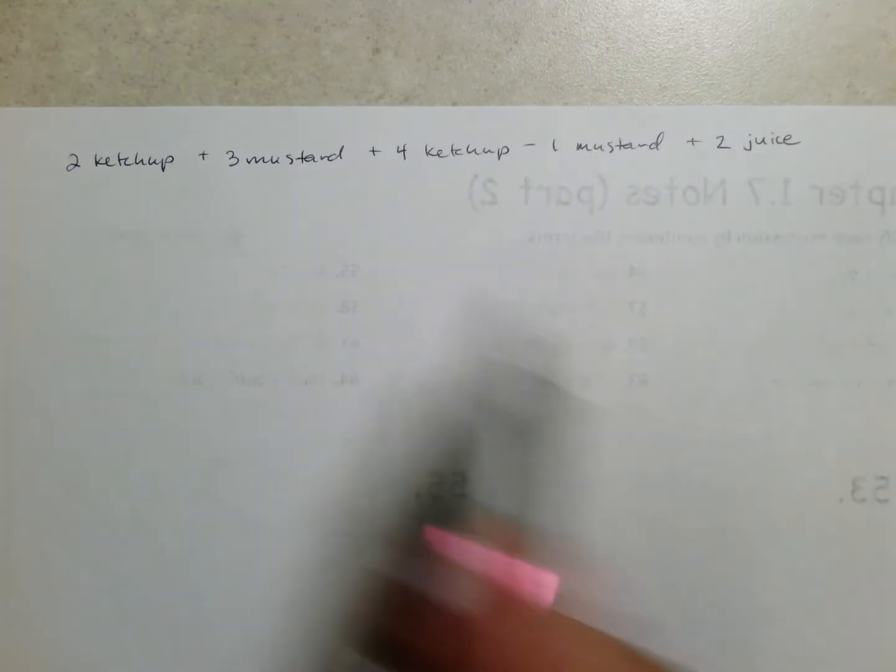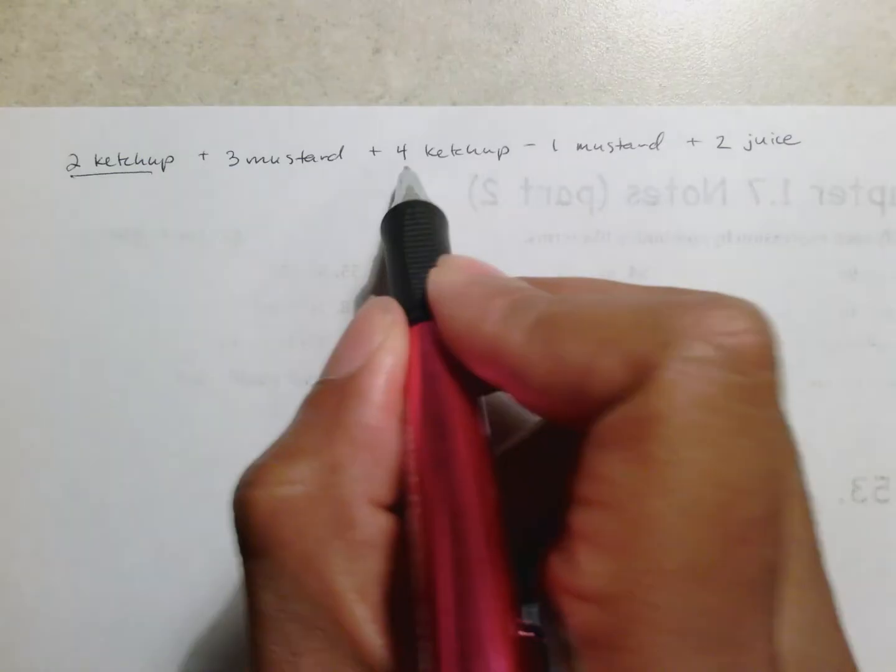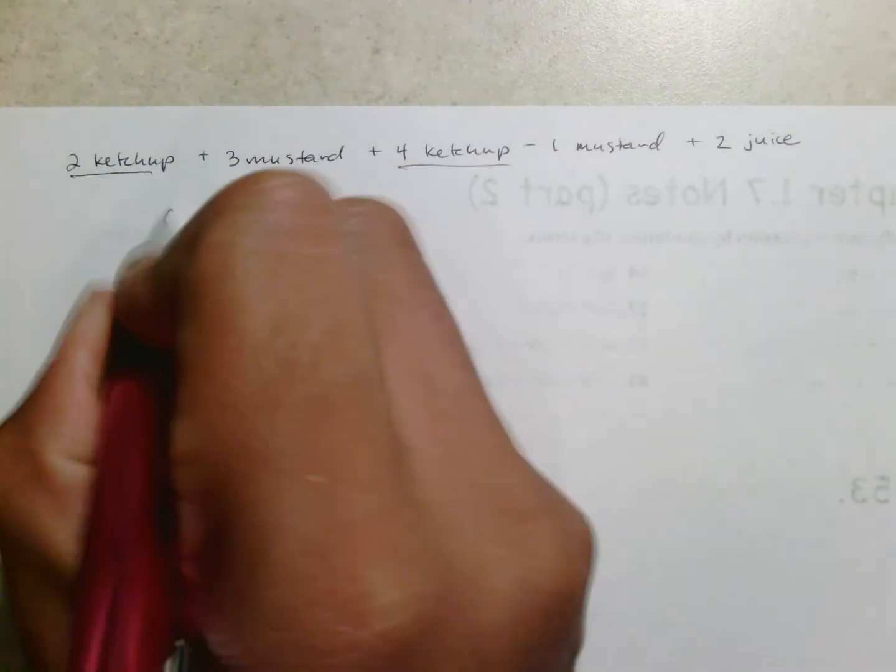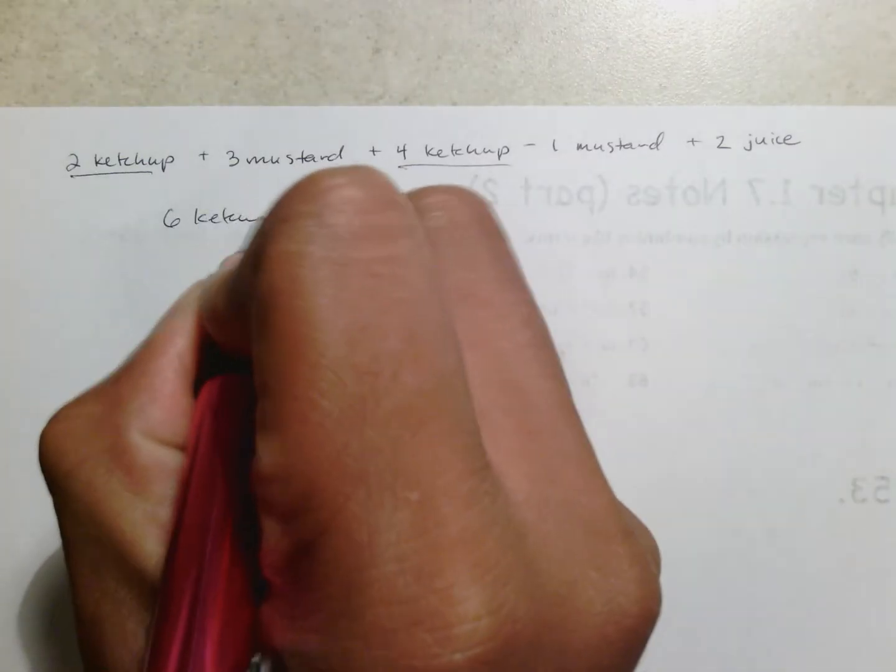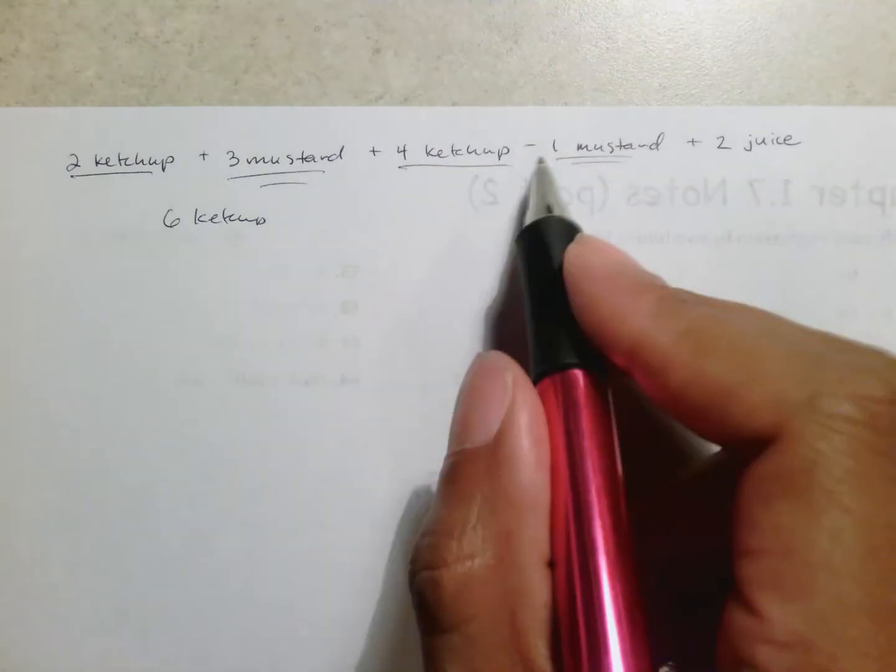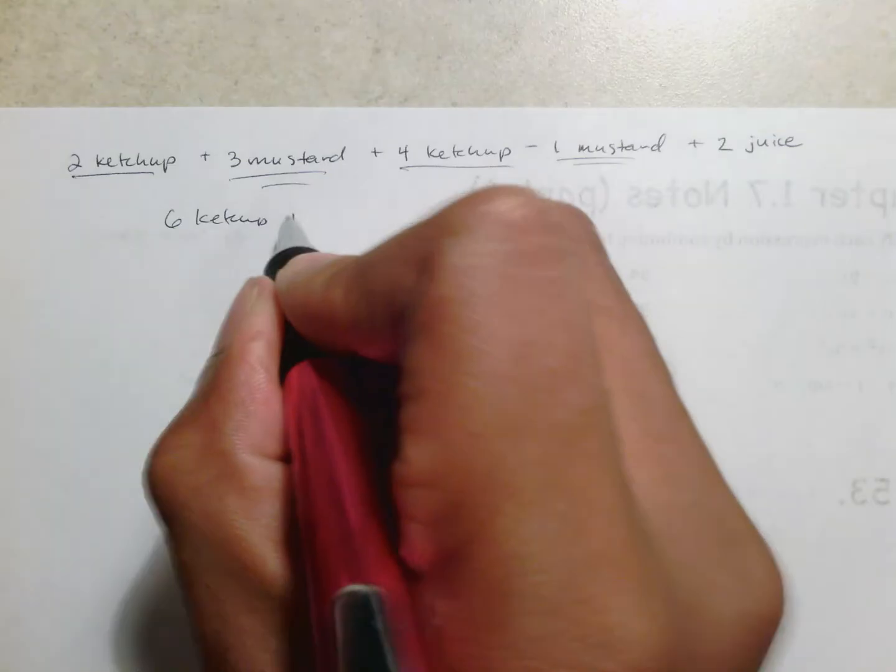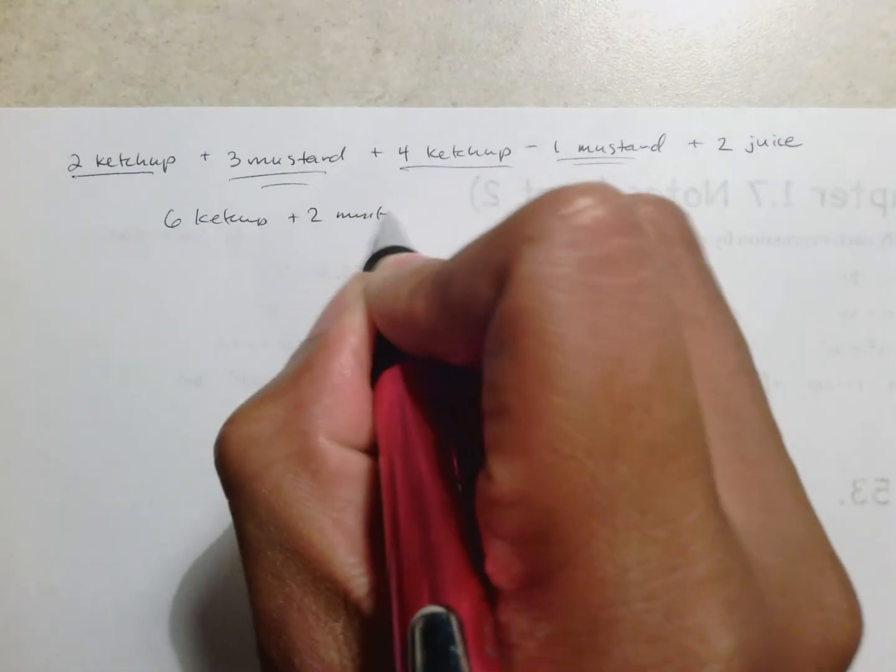Your job is not to have the ketchup separated and the mustard separated. What you want to do is you want to put the two ketchups with the four ketchups to make six ketchup. You also want to go ahead and take the three mustard and the negative one mustard. And again do the regular math.